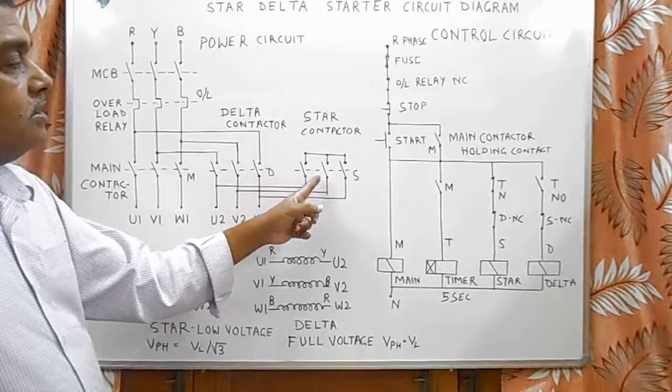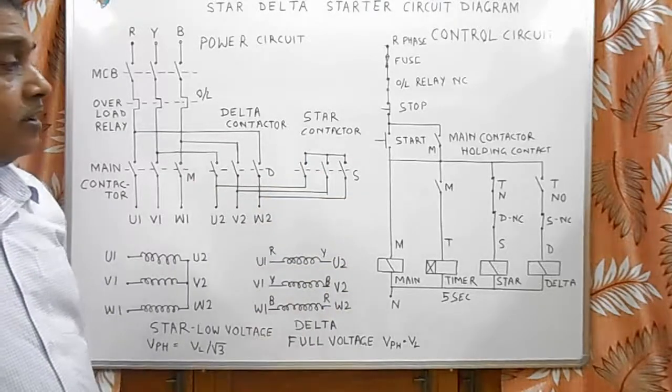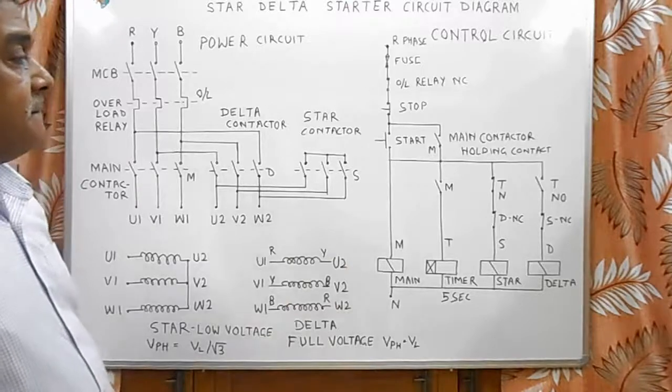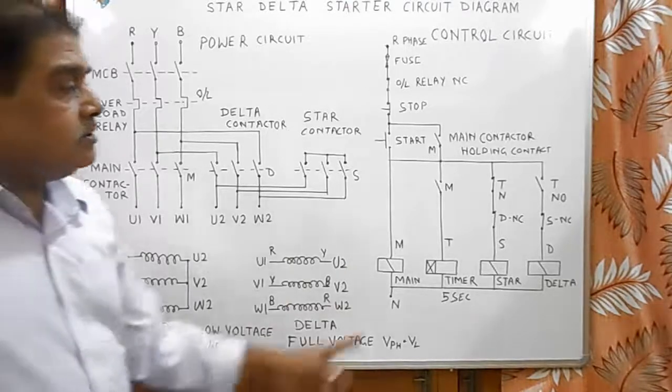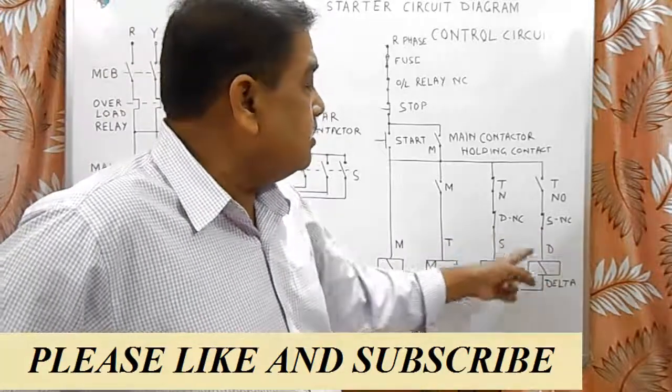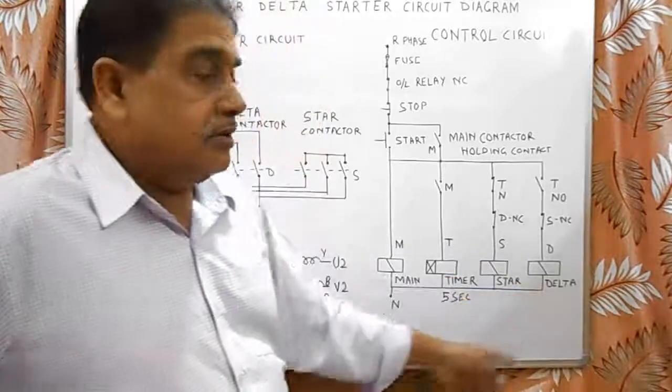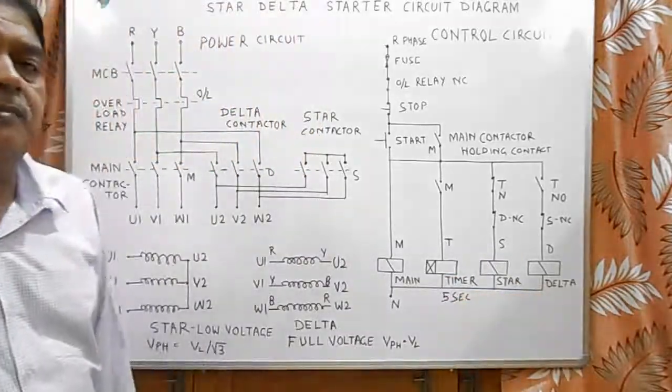Star contactor has already stopped, so short circuit is removed from this point. The delta NC contact and star NC contact are given here for making star and delta contactor interlocking, so that they cannot pick up simultaneously.